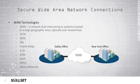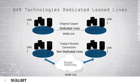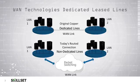We can see an example of a WAN at the bottom of the screen here, where our Dallas office is connected to our New York office securely. We can use several different types of technologies to accomplish this: PSTN or the Public Switched Telephone Network, ISDN, DSL, Frame Relay, X.25, ATM, Voice over IP, Multi-Protocol Label Switching, or Metro Ethernet. Typically WANs would use dedicated leased lines between two locations over copper wiring, to create a dedicated link for the wide area network between these two locations.